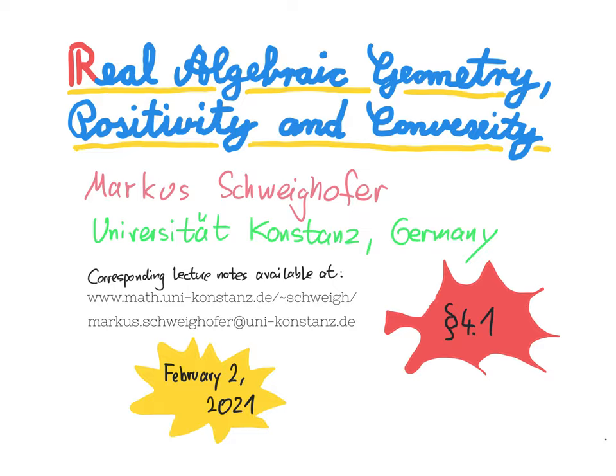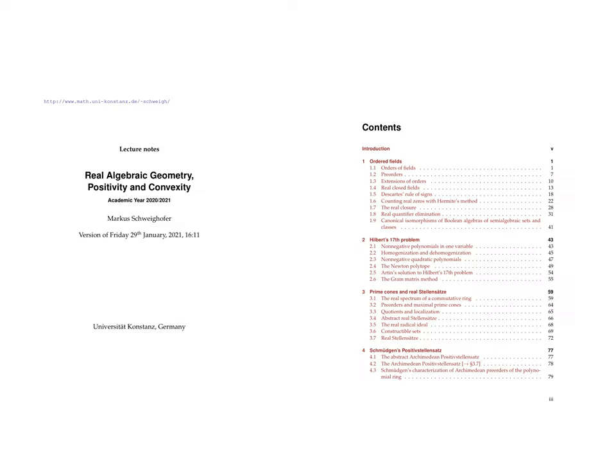Welcome to today's lecture! Today we start with chapter 4 in our lecture notes on Schmittgen's Positivstellensatz, and the section we will treat today is 4.1 on the abstract Archimedean Positivstellensatz.